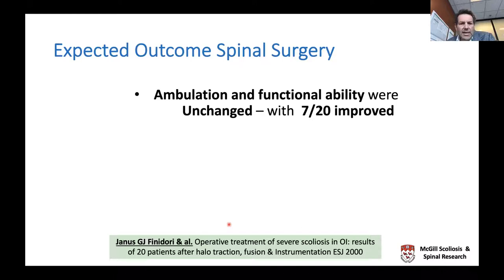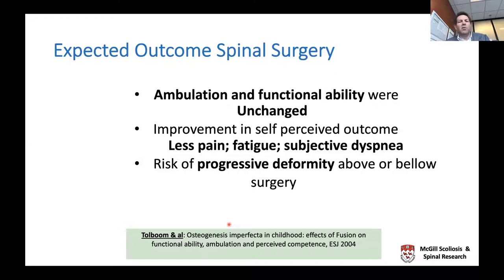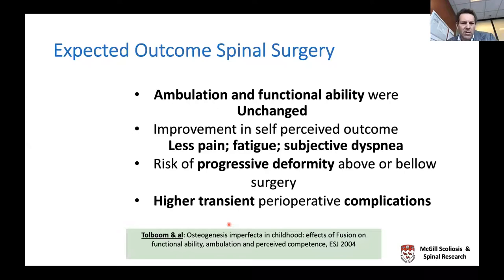Regarding expected outcomes of spinal surgery, published data from specialized centers show that ambulation function is actually unchanged or improved—contrary to concern that fusion causes mobility loss. Children self-report decreased pain, less fatigue, and subjective improvement in shortness of breath. One must monitor for progressive deformities above and below a short fusion. The surgery does carry a higher complication rate than in children without OI, which underscores the importance of multidisciplinary team optimization of all systems preoperatively to make surgery go as smoothly as possible.